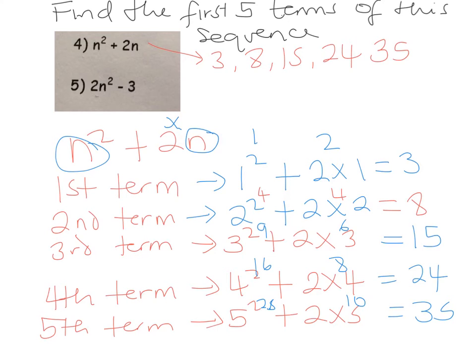You might want to try question number 5 by yourself. But the first five terms of question 5, which says 2n squared minus 3, would be... I'm just going to try and quickly work it out.